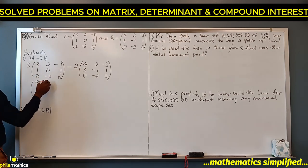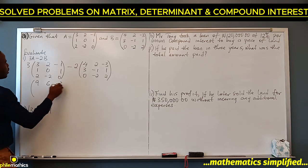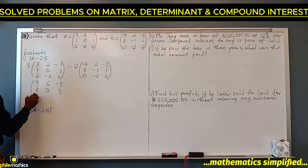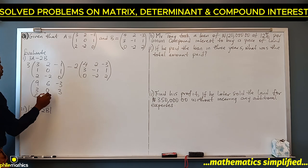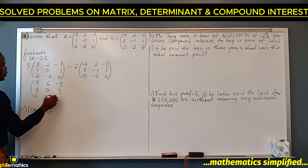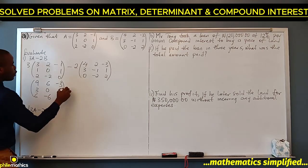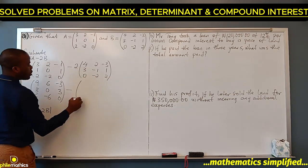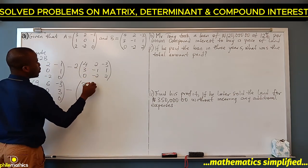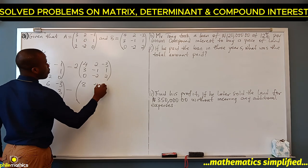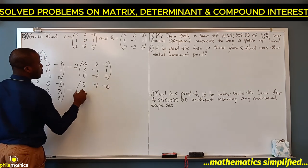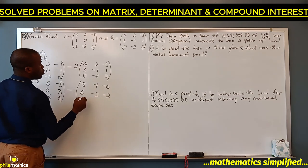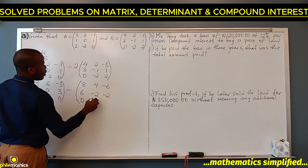Multiplying 3 into every entry of A gives: 9, 6, -3, 3, 0, 3, 6, -6, 0. And multiplying 2 into every entry of B likewise gives: 8, 4, -6, 6, -2, -2, 0, -4, 4.